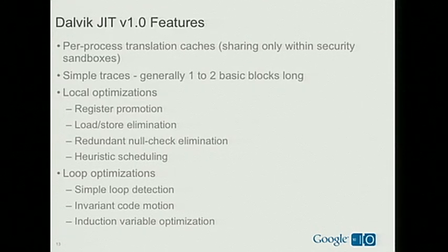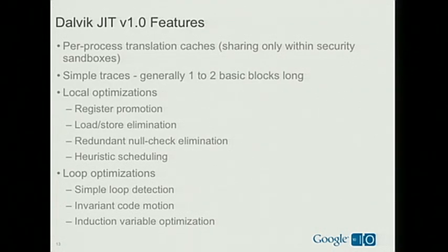Some specifics about the Dalvik JIT: we have a translation cache per process, so every Dalvik process has its own private translation cache, but all threads within that process share that cache. Our traces are relatively simple in this first release — generally just one or two basic blocks, where a basic block is a string of instructions followed by a branch out. Our optimizations include register promotion, load/store elimination, null check elimination where possible, and instruction scheduling based on heuristics. We also have loop detection code, so if we can detect a loop, we perform simple loop optimizations: invariant code motion and induction variable adjustments.